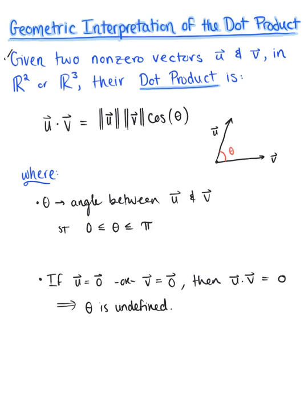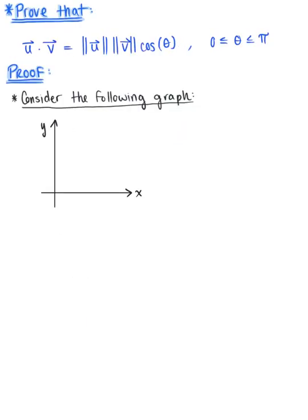Let's now look at where this formula comes from — we need to establish equivalence. We need to verify that the computational definition of the dot product and the geometric definition of the dot product are in fact equal.